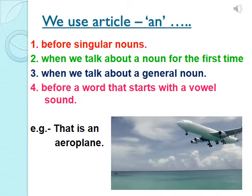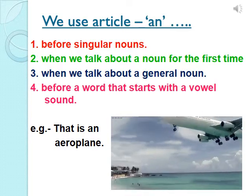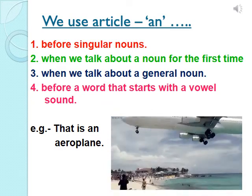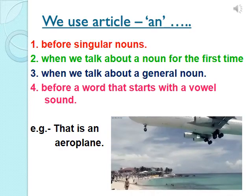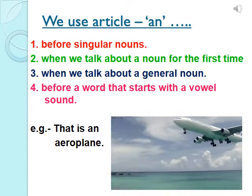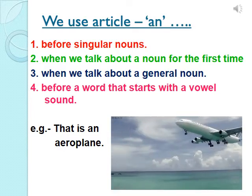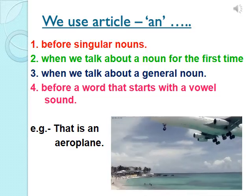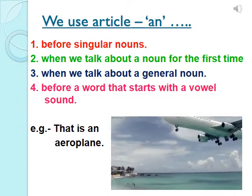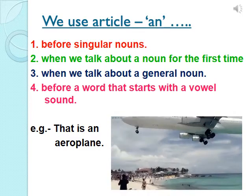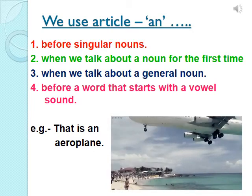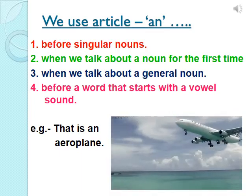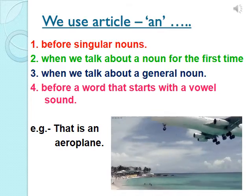Article AN is used before singular nouns when we talk about a noun for the first time, when the noun is general, and when the word starts with a vowel sound. For example: 'That is an aeroplane.' Here the aeroplane is one, I am talking about it for the first time, it can be any aeroplane, and the word aeroplane starts with a vowel sound of A. Therefore, we put article AN here.